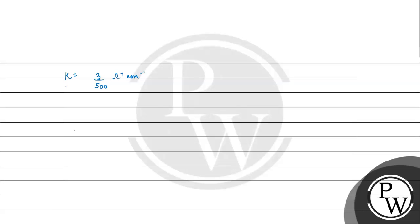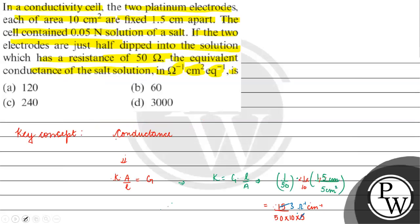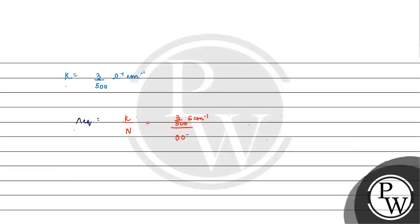Now we need to find equivalent conductance, which is equal to kappa by normality. Kappa is 3 upon 500 ohm inverse cm inverse. Normality is 0.05 equivalent per liter. We have liters here.